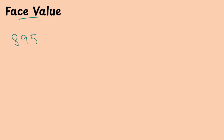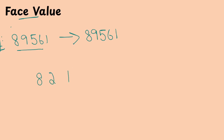Next, we will see what is face value. Face value is simple — if I give you 89,561 and ask for the face value of a digit, you are going to write the same digit. The same digit is the face value. For example, if I ask for the face value of 2, the answer is 2. There are no changes — the answer is the same as the given digit.